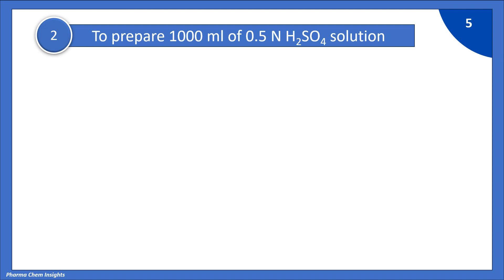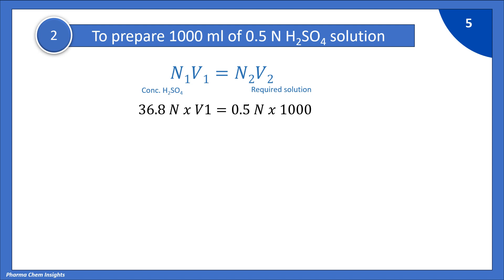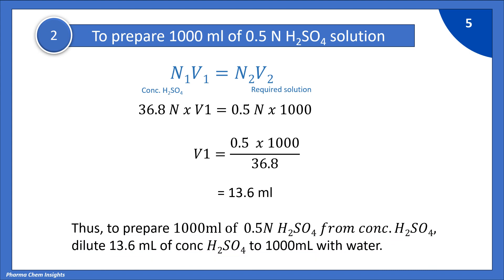Next example: to prepare 1000 ml of 0.5 normal H₂SO₄ solution. Using the normality equation N1V1 = N2V2: 36.8 × V1 = 0.5 × 1000. So V1 = (0.5 × 1000) ÷ 36.8 = 13.6 ml. To prepare 1000 ml of 0.5 normal H₂SO₄, dilute 13.6 ml of concentrated H₂SO₄ to 1000 ml with water, which gives 0.5 normal H₂SO₄ solution.